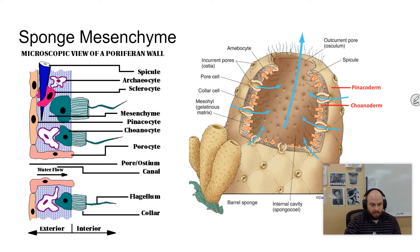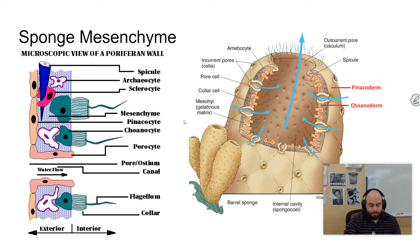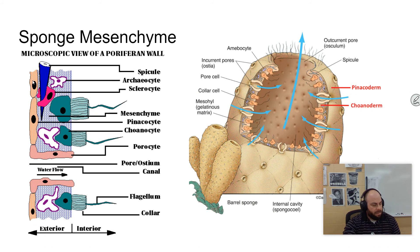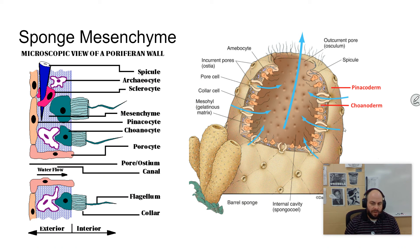There are also cells called archaeocytes — amoeboid cells that don't have a definite shape. They take in particles and create spongin fibers and spicules. They move throughout the mesenchyme and serve several functions, acting almost like sponge stem cells. Then there are pinacocytes, which make up the pinacoderm — the outermost layer of the sponge. This is the closest thing a sponge has to a tissue, analogous to our epidermis.